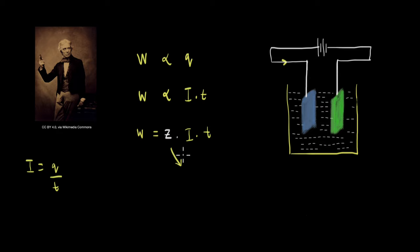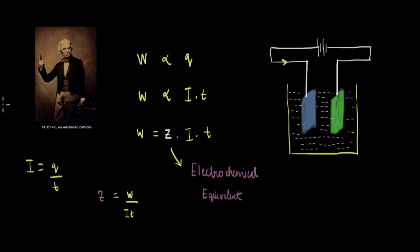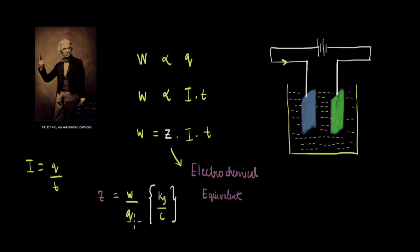This z is called the electrochemical equivalent. Looking at the units of z, it equals w divided by i×t, or equivalently w divided by q. So the units of z are kg per coulomb — mass per charge. One way to think about z is that it tells us how much material is deposited when a charge of 1 coulomb passes through the electrode.